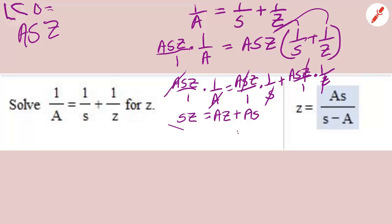And since we're solving for Z, this is what I have now. Notice that I have a Z term here and a Z term here. I need to get my Z terms together. So I'm going to subtract AZ from both sides, because remember, we have to solve for Z. That zeroes out the AZ over here, leaving me an AS. Meanwhile, over here on the left, I'm going to have SZ minus AZ.